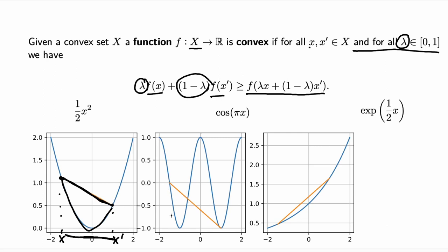Here we see an example of a non-convex function, where this property is obviously not true. And here we see another example of a convex function — this is the exponential function. Here we see the cosine, and the cosine is a non-convex function.